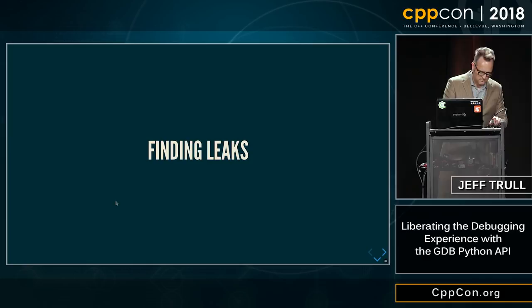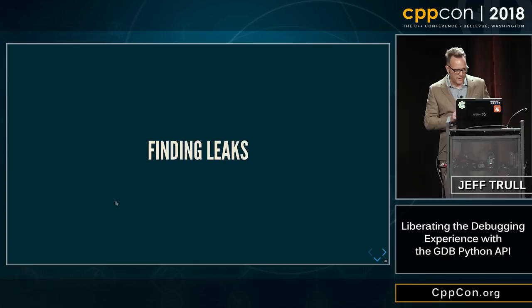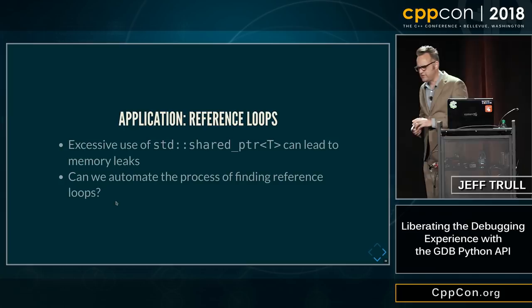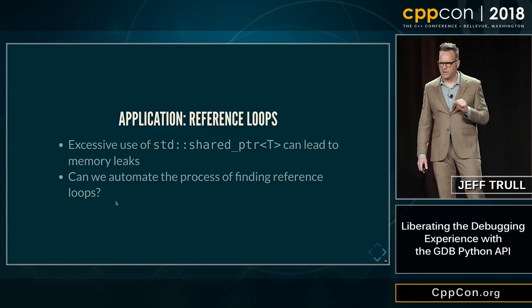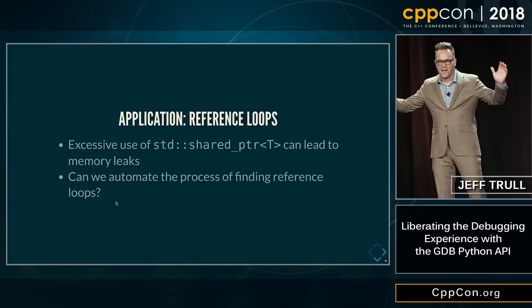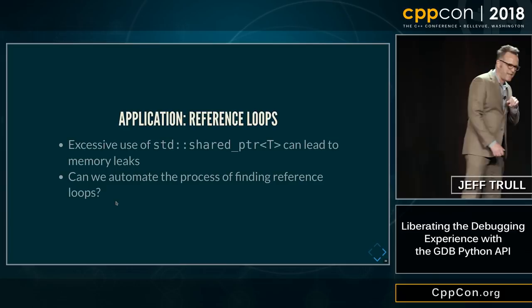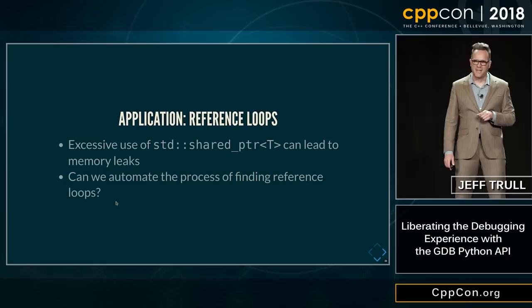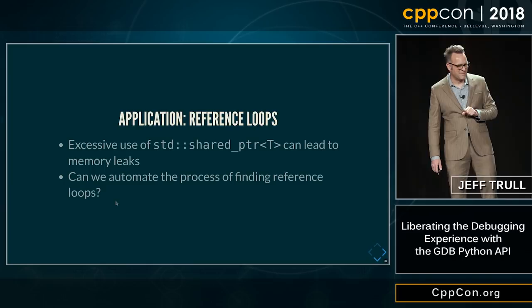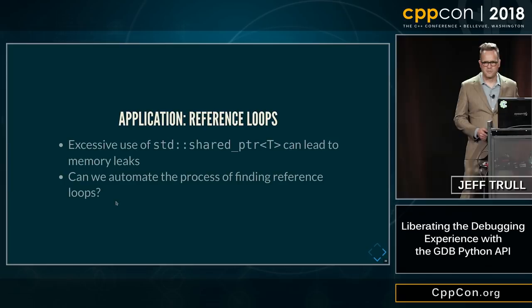Next example: finding leaks. I don't know if any of you have had this experience where you've been trying to persuade other people at your company to adopt more modern techniques. You said 'no raw pointers', and one day they came back and said 'I've done it — I've replaced all the raw pointers with shared_ptr'. And the program doesn't crash anymore, but it does run out of memory. And so you think, yeah, there's probably some kind of circular reference problem. This is common enough that I think it's helpful to make a tool to help us figure out what's going on in cases like that.